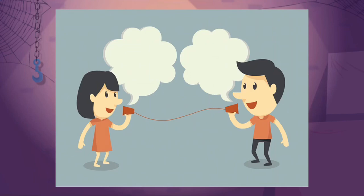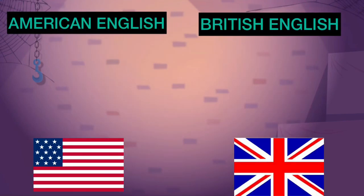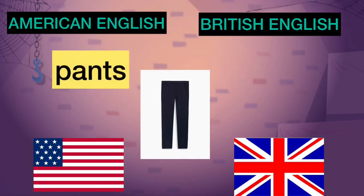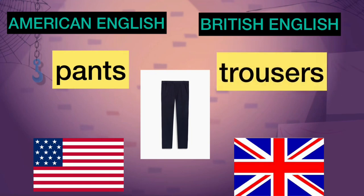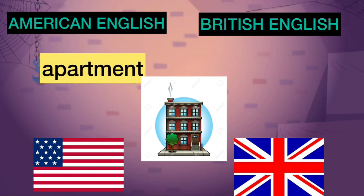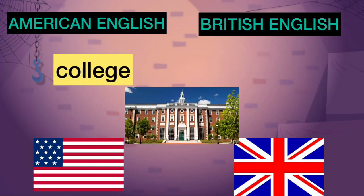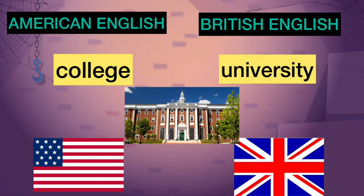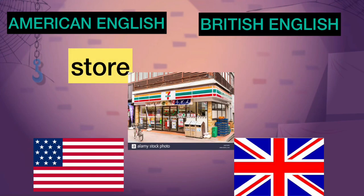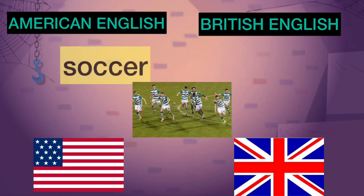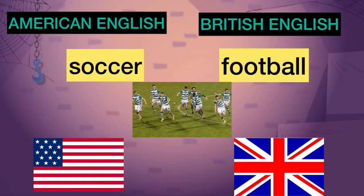Let's try to differentiate some differences between American English and British English. For American English, they call it pants; while for British, they call it trousers. Americans say apartment; British say flat. Americans say college; British say university. Americans say store; British say shop. Americans say soccer; British say football.